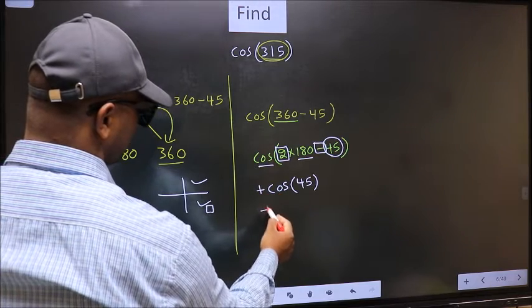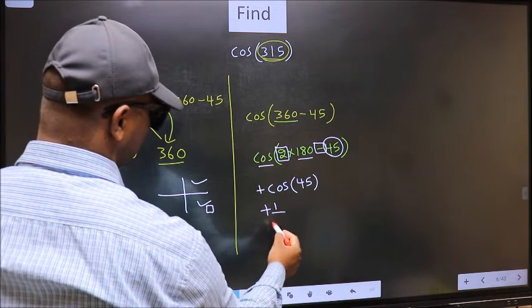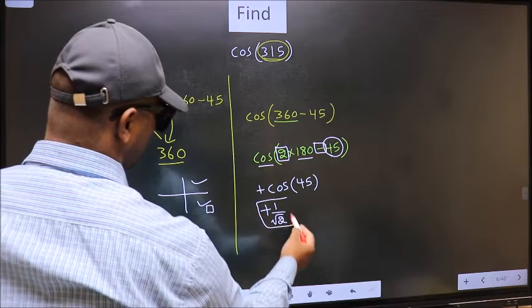So we should put plus. Plus cos 45 is 1 by root 2. This is our answer.